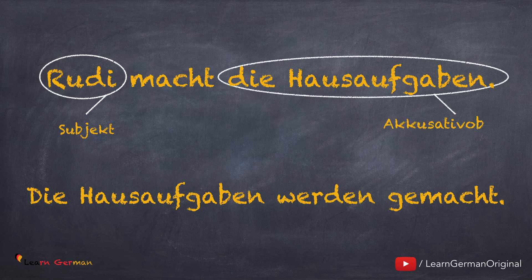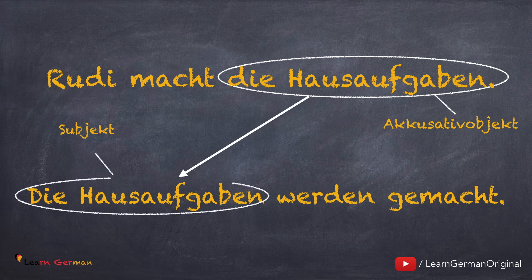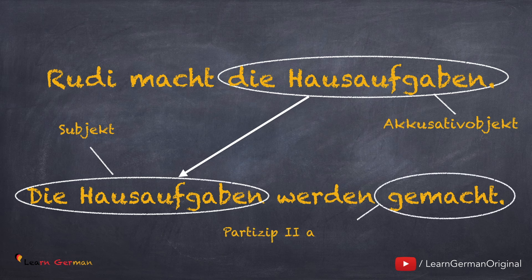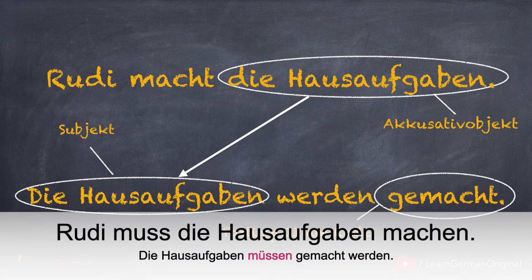In dem Aktivsatz ist Rudi das Subjekt, der Täter, und die Hausaufgaben ist das Akkusativobjekt. In dem Passivsatz wird das Akkusativobjekt zum Subjekt. Dieses Subjekt konjugiert das Hilfsverb werden, und am Satzende steht das Vollverb im Partizip Perfekt. Wenn man hier ein Modalverb hat, wird das Modalverb werden ersetzen und werden wird am Ende stehen.